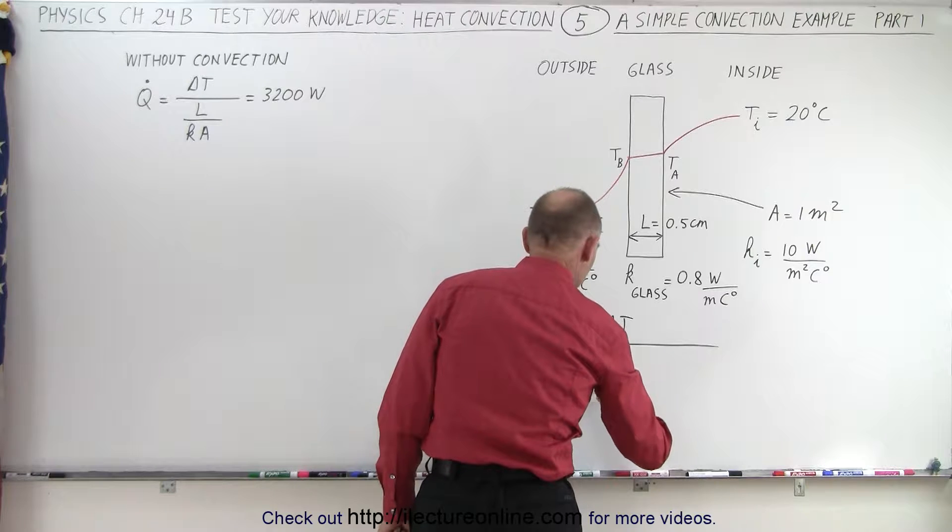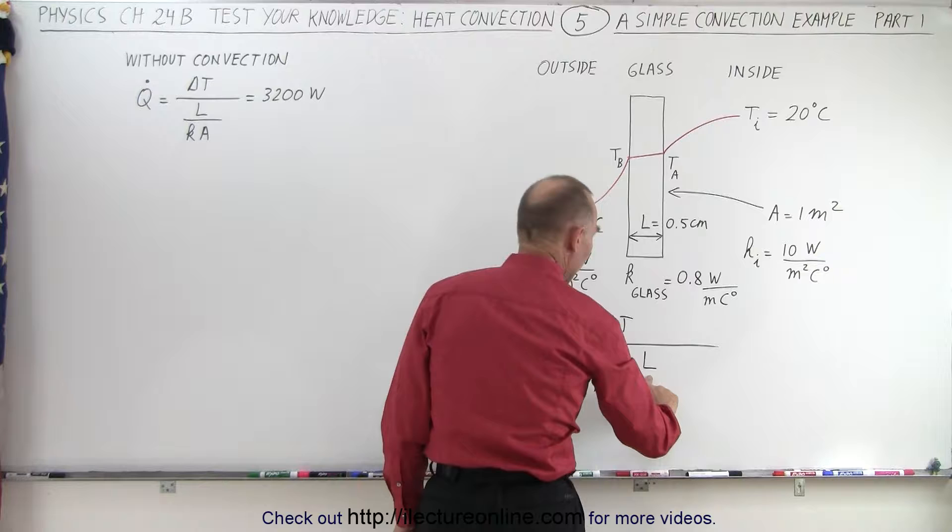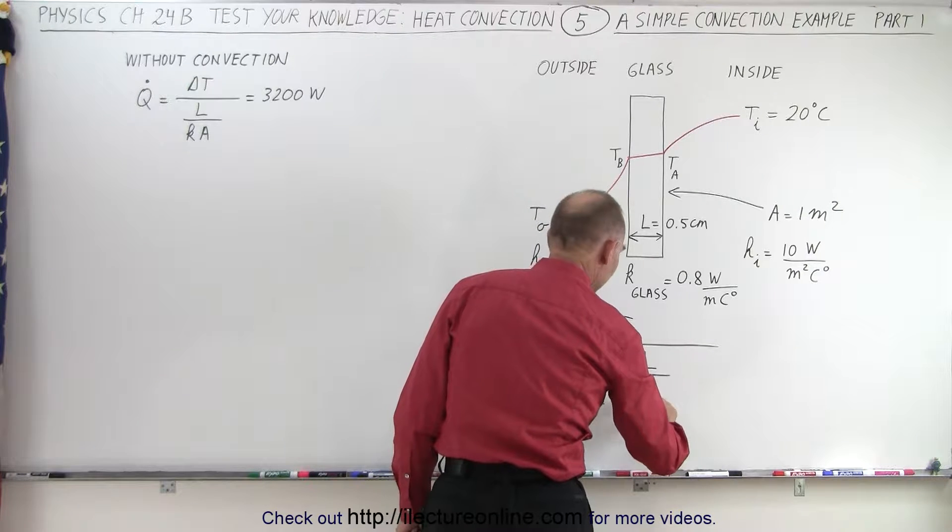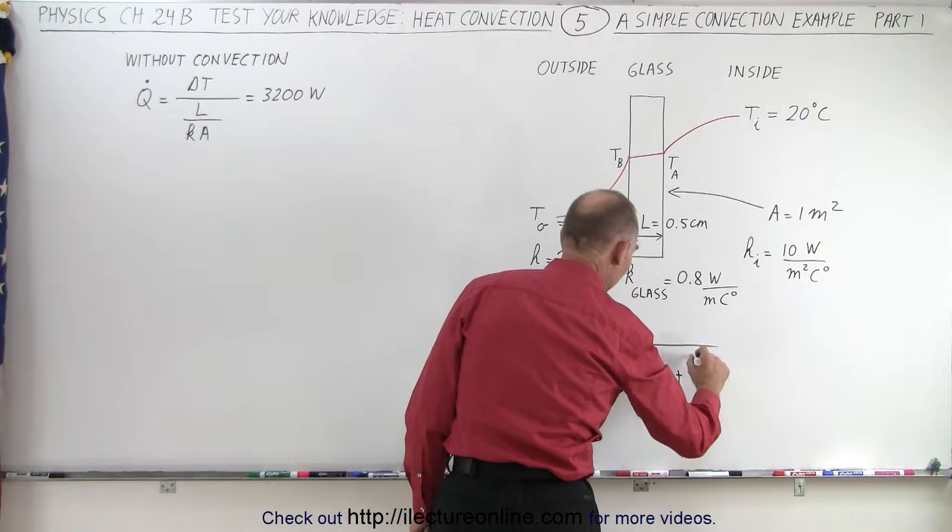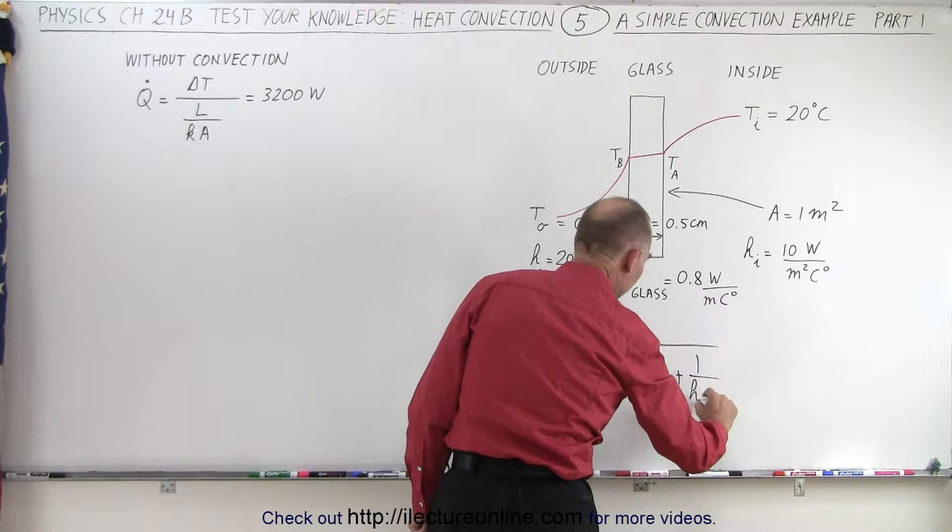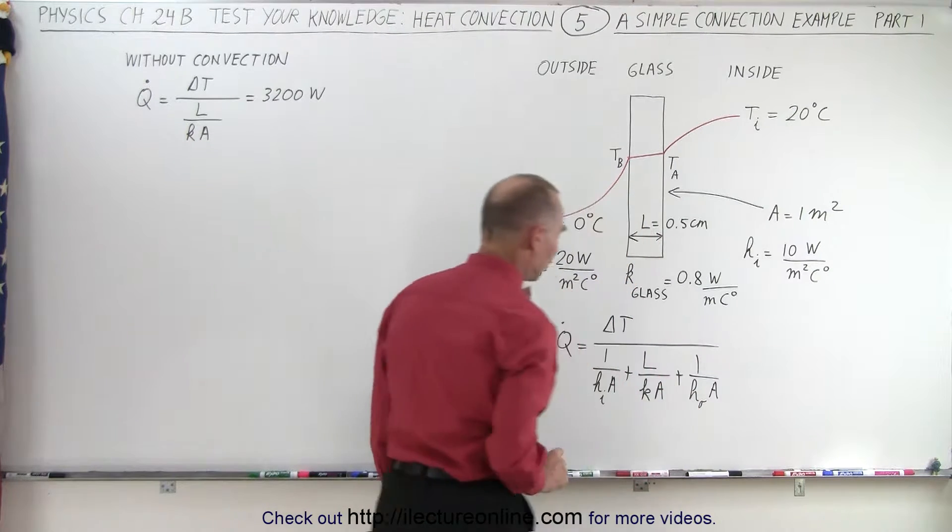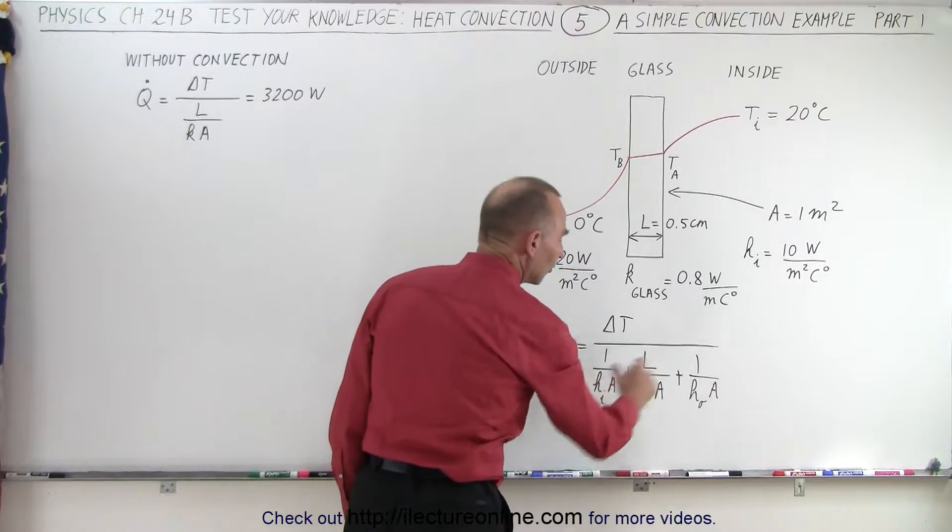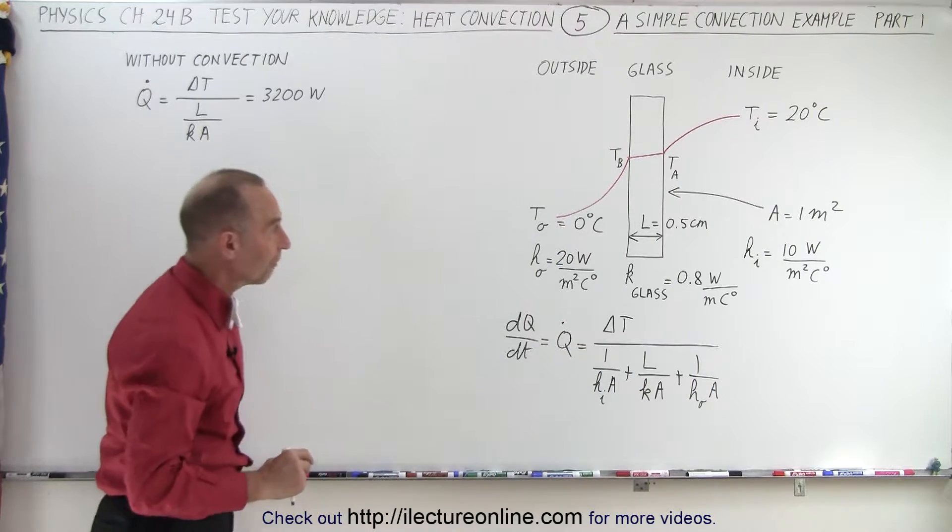And now we're going to have three of those heat resistance values: one over h_inside times the area, plus the path of the conductivity divided by k times A, plus one over h on the outside times the cross-sectional area. So now you can see we have these three resistance values, one for the outside, one for the inside, and one for the conductivity of the glass.